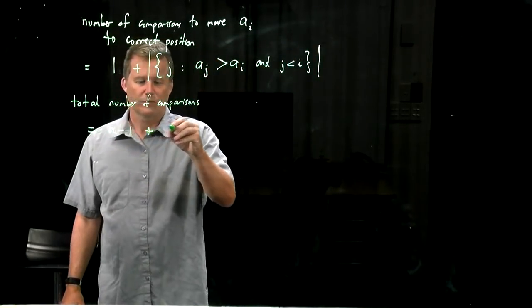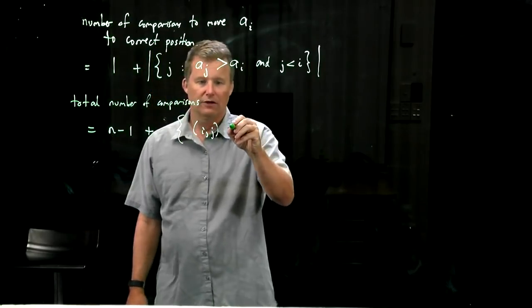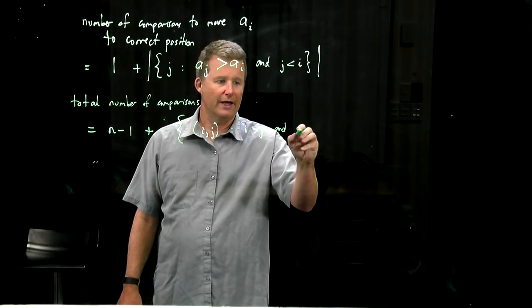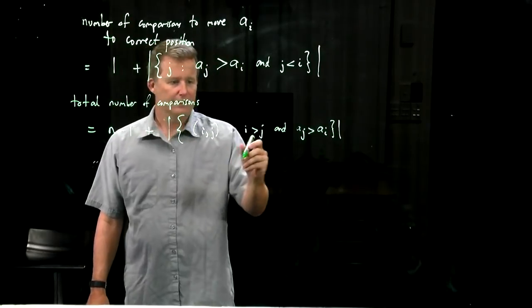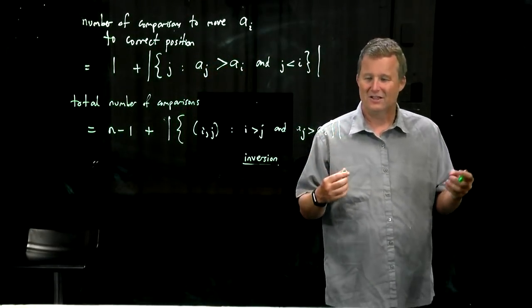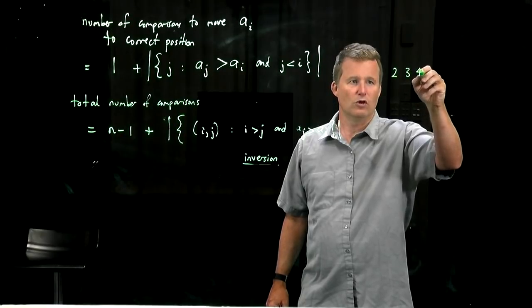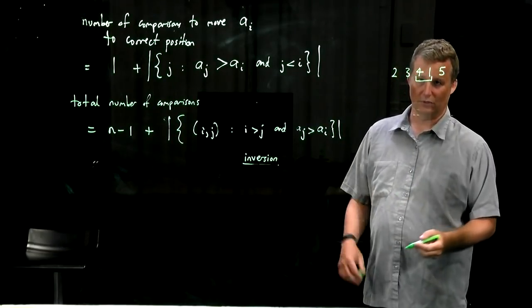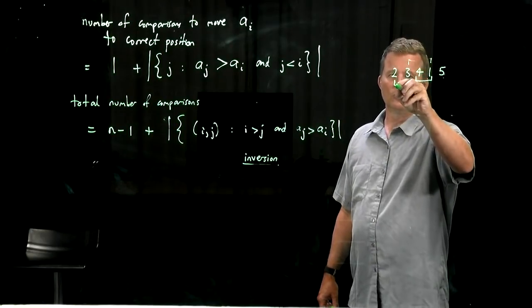So what I'm trying to say here is that we get the set of all pairs IJ such that I is greater than J but AJ is greater than AI. And such an element, such a pair is called an inversion. It's some kind of out of orderness inside the input. So for example, if I have 2, 3, 4, 1, 5, this is an inversion if I'm using the normal ordering. This pair is not because it's in the right order. This is also an inversion. 2, 1 is an inversion and that's all.